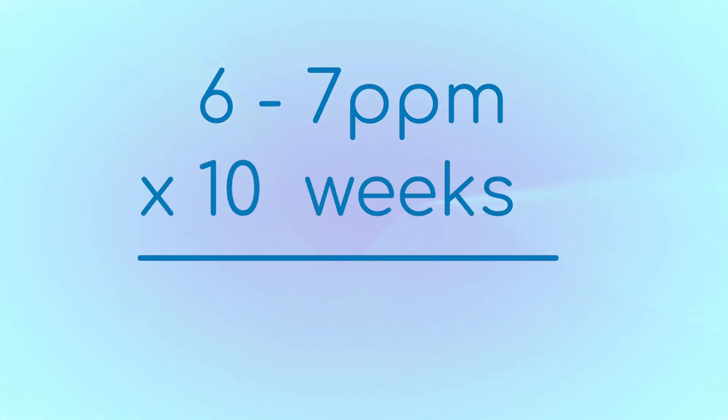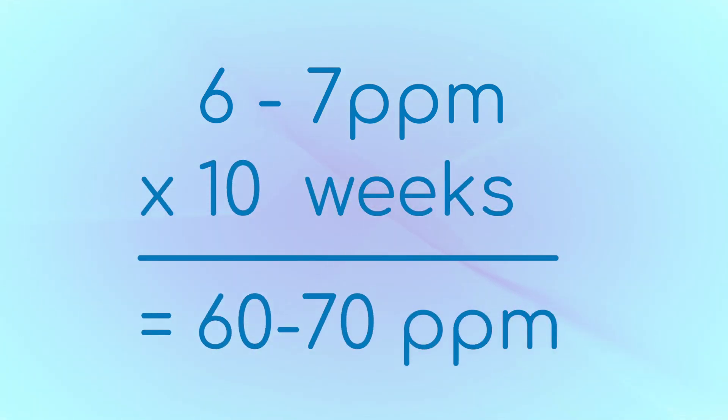It adds up very quickly. Say you use one pound per week in a 10,000 gallon pool. Assuming no dilution, in just 10 weeks you have 60 to 70 parts per million of stabilizer in the water.